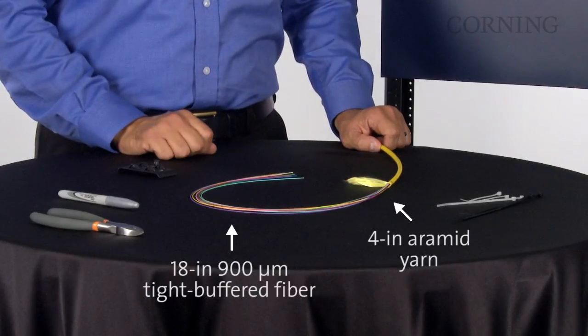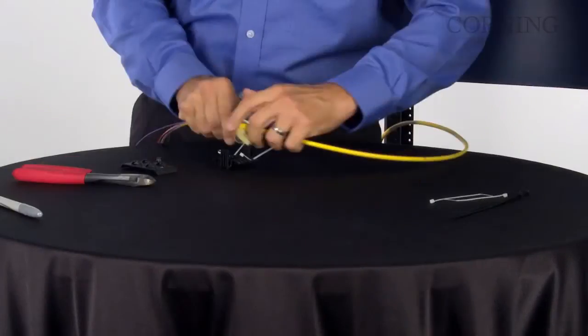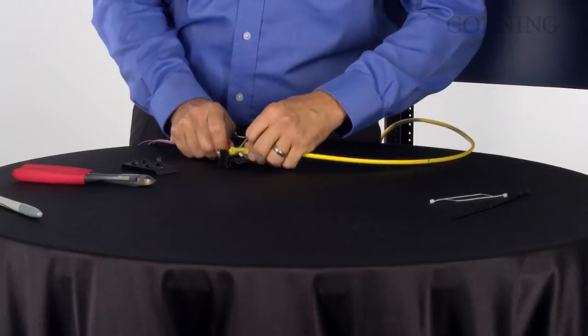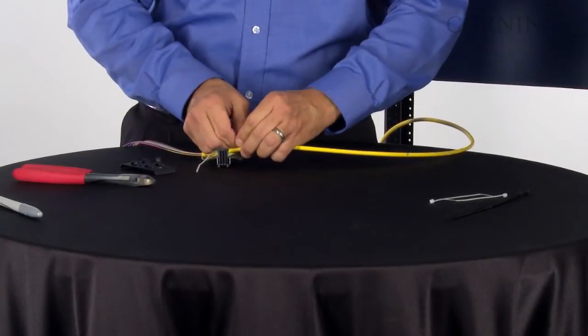If you have armored cable, you want to make sure it is properly grounded according to your local authorities. Place the cable on the strain relief bracket and secure it with two cable ties.